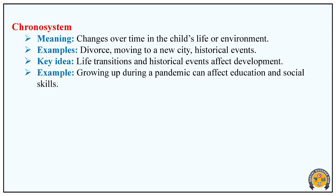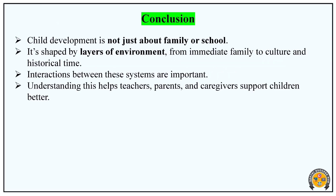Child development is shaped by layers of environment — from the immediate family to cultural and historical time. Interaction between these systems is important. Understanding this helps teachers, parents, and caregivers support children better.